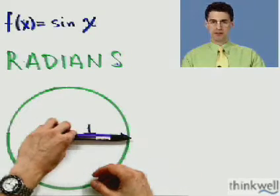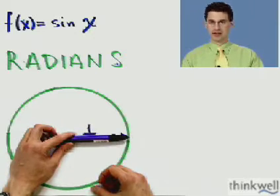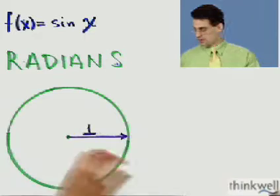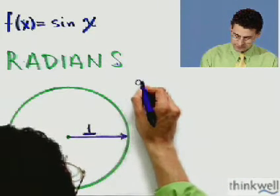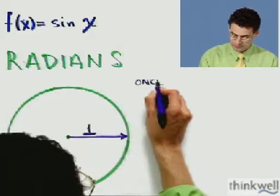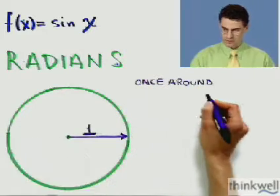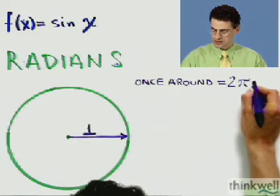So, actually, that seems to be a nice number to call one complete thing around. So, let's now call once around 2π, and we'll call those units radians. So, radians, so once around, once around equals 2π radians.